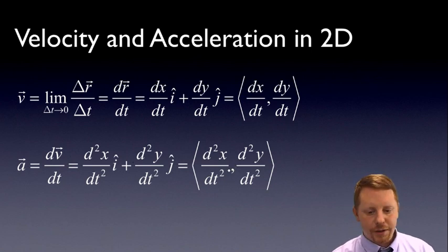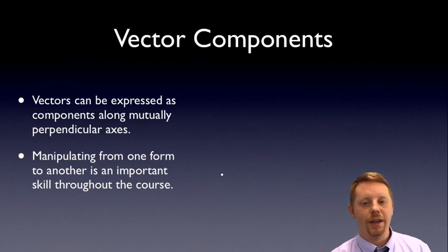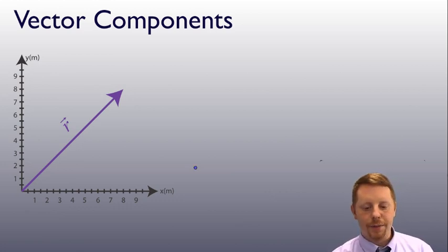So vector components, something you've probably been doing for quite a while now. Of course vectors can be expressed as components along mutually perpendicular axes. You can break a vector up into x, y, and z components. Manipulating from one form to another is a pretty important skill in physics as well. So let's just go over this very quickly. If we have some vector r, we want to break it up into x and y components. Something like this.